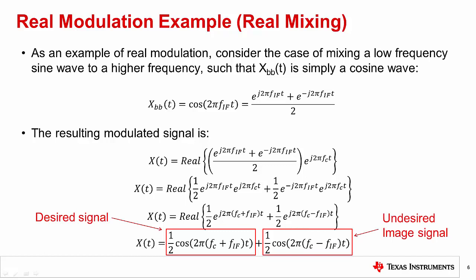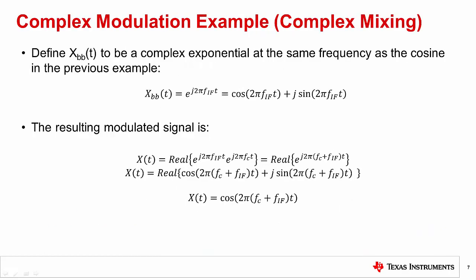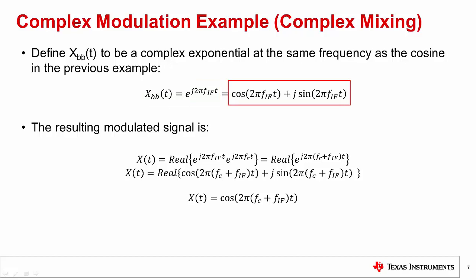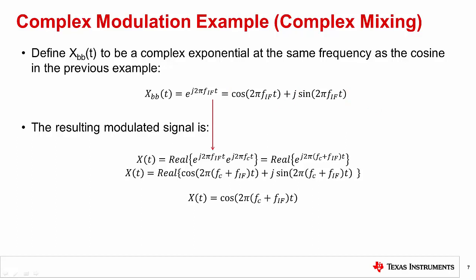Consider the same scenario, but using complex modulation instead. Here, the baseband modulation function is a complex exponential rather than just a real-valued cosine wave. Using Euler's again, we can see that the complex exponential is just a summation of a cosine and a sine with the sine term multiplied by j. So the in-phase modulation function I is a cosine wave, and the quadrature phase modulation function Q is a sine wave. Plugging this complex baseband function into the analytic definition of x(t), combining exponential powers, and using Euler's results in the final modulated signal.